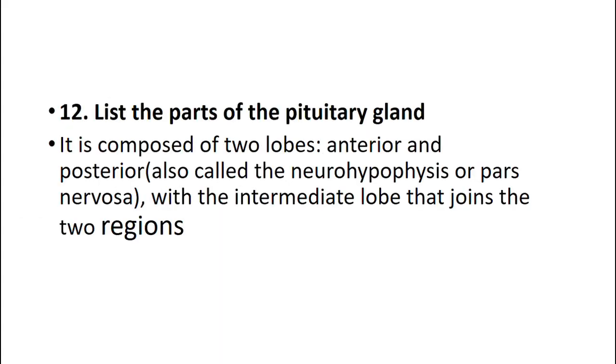The parts of the pituitary gland. It is composed of two lobes — anterior and posterior (also called the neurohypophysis or pars nervosa) — with an intermediate lobe that joins these two regions.